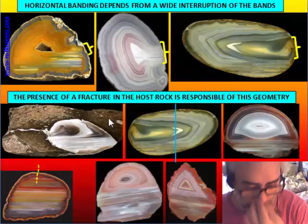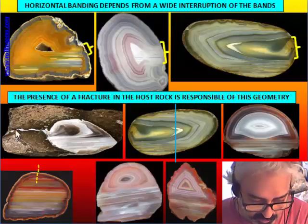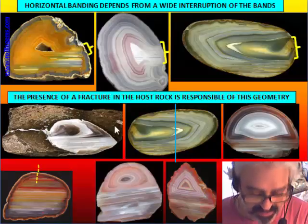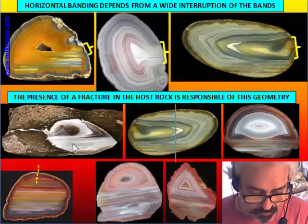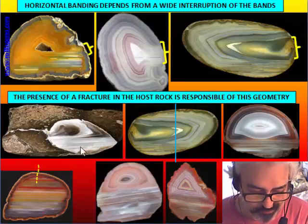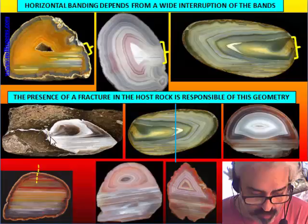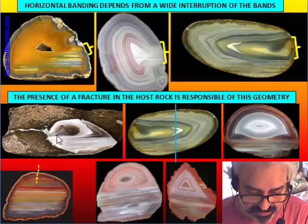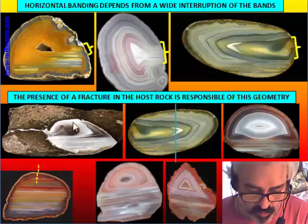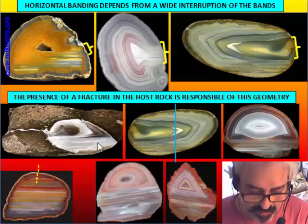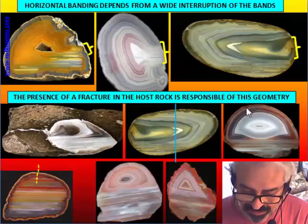If we imagine water entering from porosity — that is very slow — versus from a fracture, which is fast — this fracture is the cause of the dilution, and the dilution provokes the formation of horizontal banding until the horizontal banding closes the input channel. So the entrance of water is blocked and the agate changes to concentric banding. In this way, we make a particular structure very common.